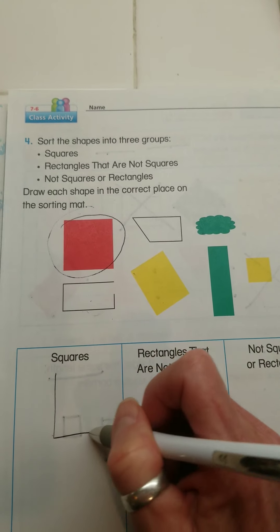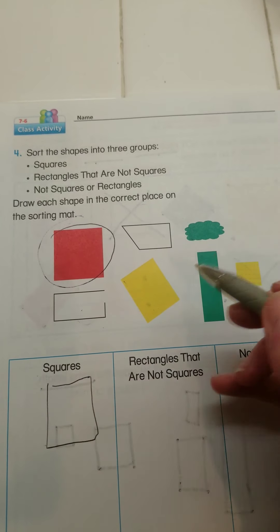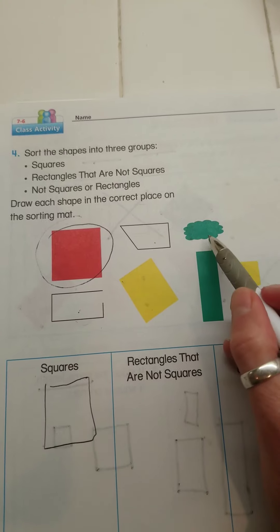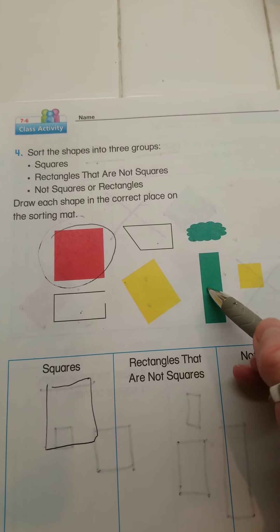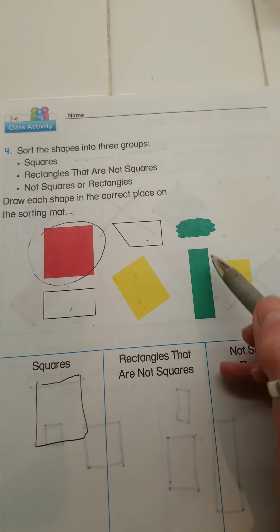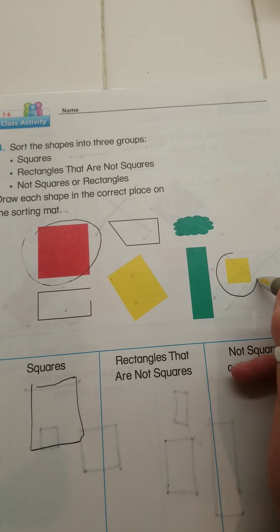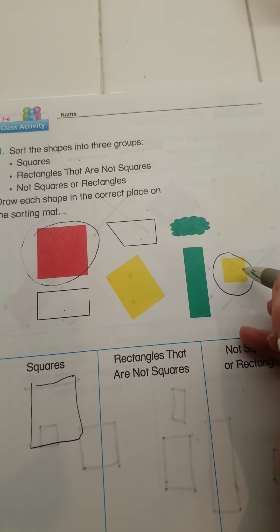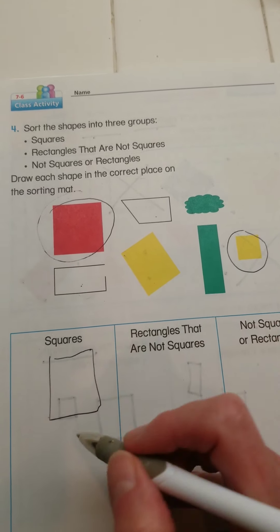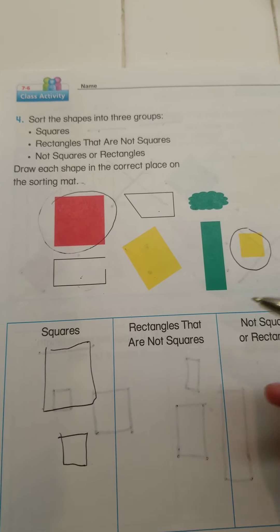So I'm going to draw that one here. That's not a square, that's not a square, that's not a square — this one is not a square because I see long sides. But this little one over here is a square because all sides are the same length, so I'm going to draw this one over here too.